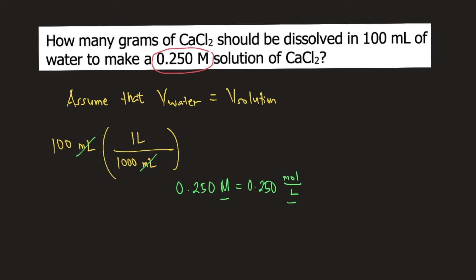So you put this into your conversion. You put 1 liter on the denominator, and on top you put 0.250 moles, and this is moles of calcium chloride, or CaCl2. So liters would cancel. Now you have moles of calcium chloride.